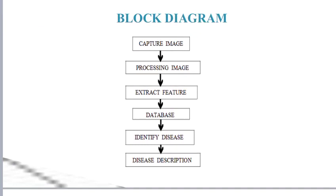Regarding the block diagram: firstly, various images of plants are captured through the camera placed on the robot. These images are then processed using various image processing techniques. Feature extraction is done, which plays a very important role in image processing. Features are extracted according to various parameters which help in detecting the disease on the plants. The obtained images are then compared with previously stored databases in the system. According to this, the disease on plants is identified. After all this process, we receive an email with the final result which includes the disease name, description, the pesticides recommended to cure that disease, and the cost of the pesticide.